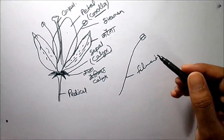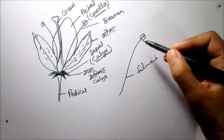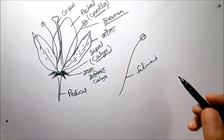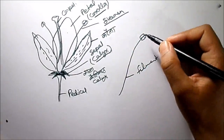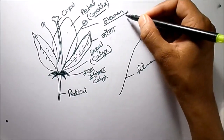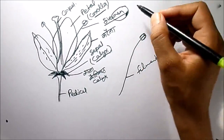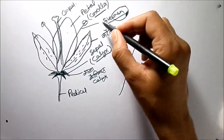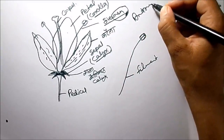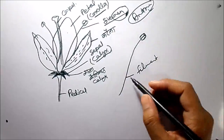Now we will start memorizing the parts of the stamen. Stamen is the single unit of androsium. Androsium is the male part and its single unit is stamen. We memorize it by 'men' meaning male, so stamen. Androsium we memorize by 'andrew', also meaning male. So now let's look at the parts of a stamen.